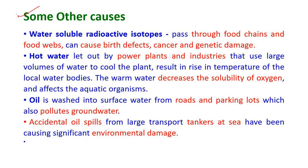Water-soluble radioactive isotopes that pass through food chains and food webs can cause birth defects, cancer and genetic damage. Hot water discharged by power plants and industries that use large volumes of water for cooling raises the temperature of local water bodies. This warm water decreases the solubility of oxygen and hence affects aquatic organisms.